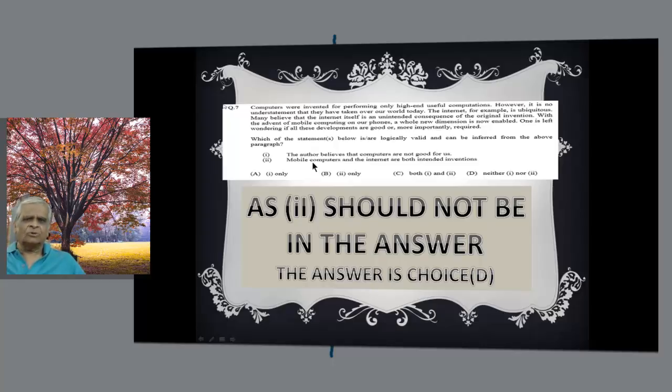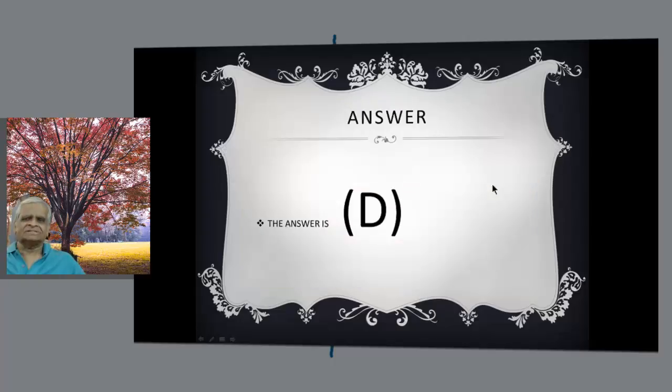Now what does 2 say? Mobile computing and internet are intended consequences. It really says internet is unintended consequences. 2 is false. So we can rule out choice B. Answer is choice D.